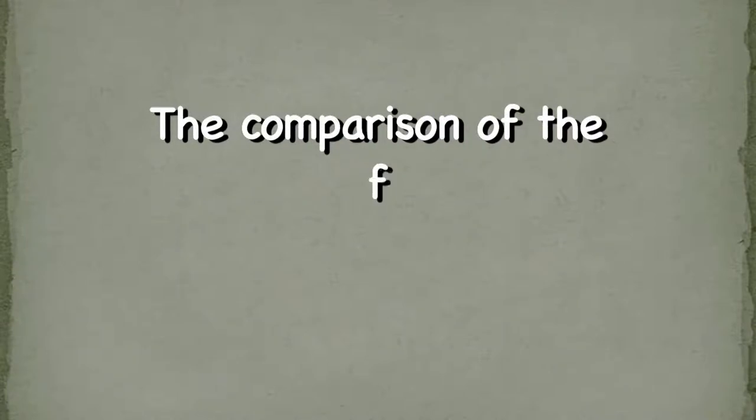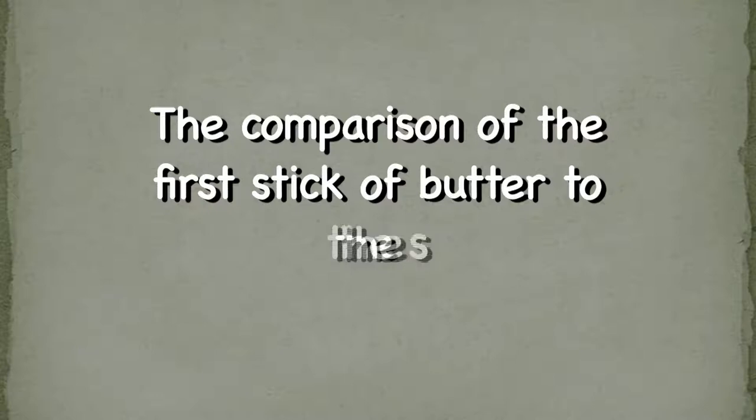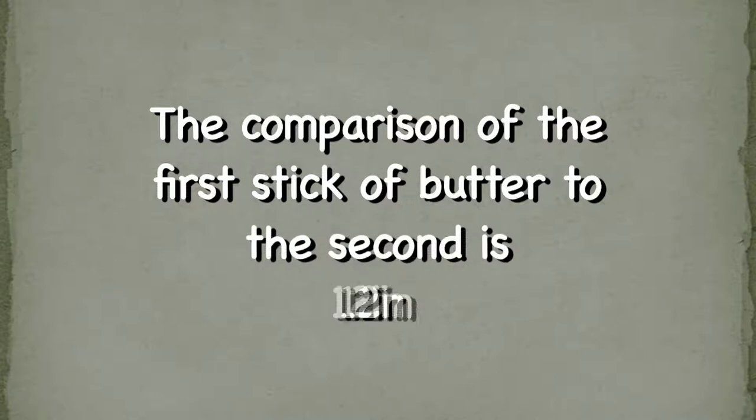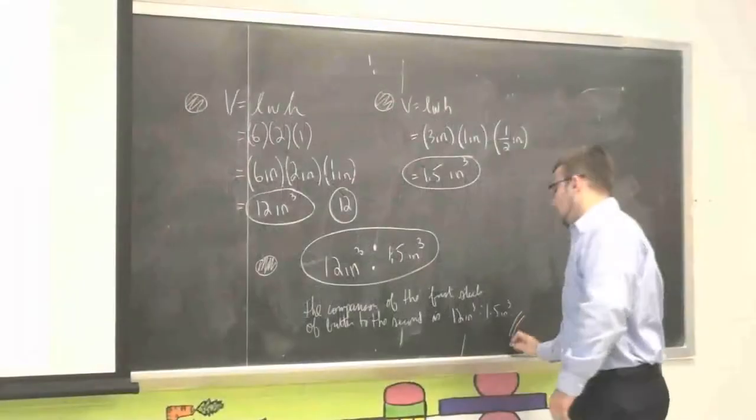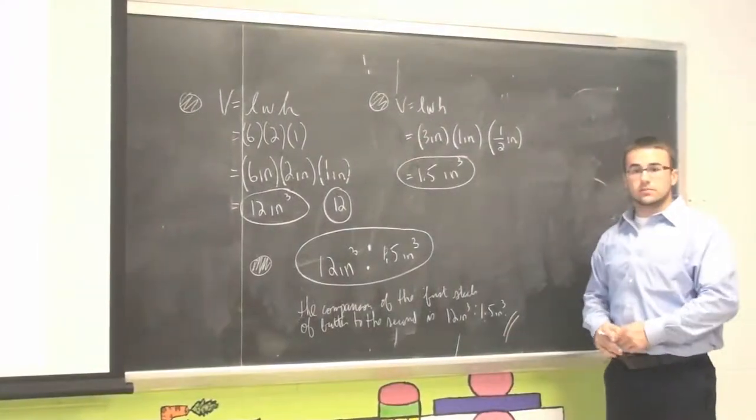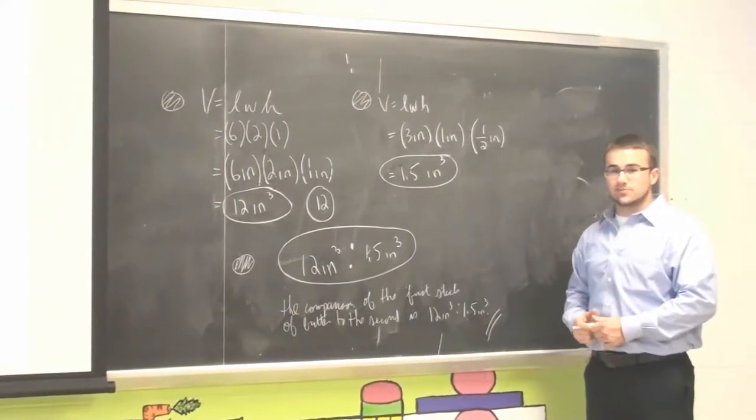The comparison of the first stick of butter to the second is twelve cubic inches to one point five cubic inches. And you are now complete. Hope this helped, enjoy.